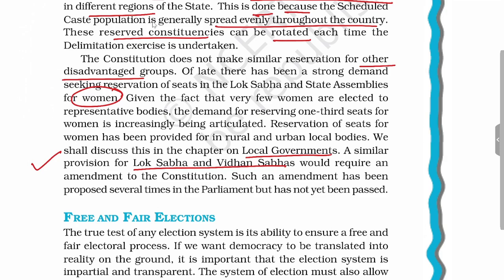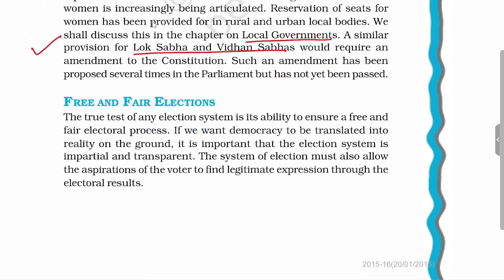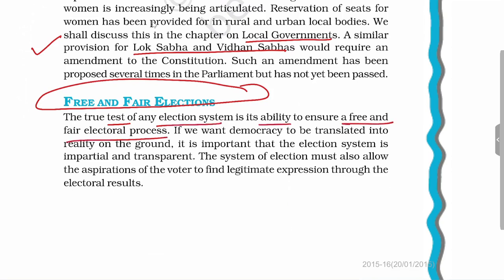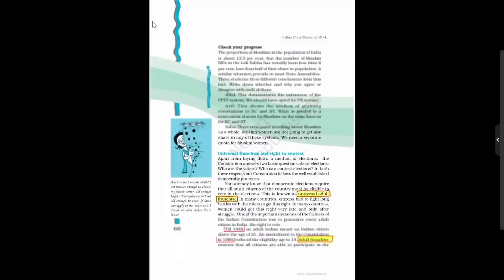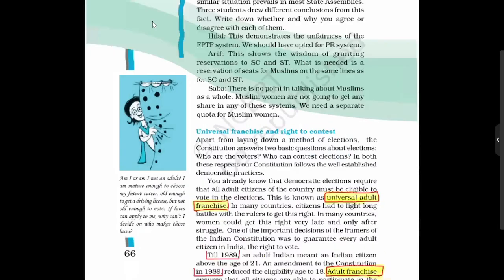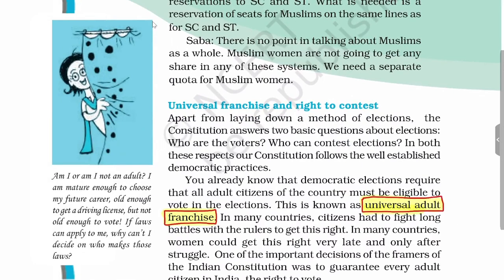Now we will see what is meant by free and fair elections and why they are important. If you want to test any election system in the world, you can test whether it is able to ensure a free and fair electoral process. In India, to have free and fair elections, first you should have universal franchise — when all the adult population of the country are eligible to vote, this is called universal adult franchise.